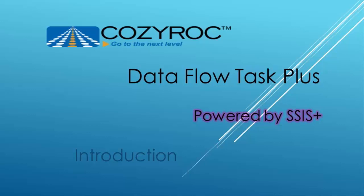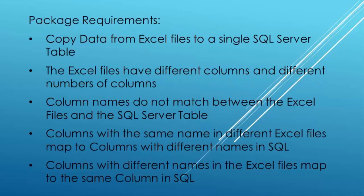In this video I'm going to show you how to handle a more complex situation. This scenario required me to set up a table that shows Data Flow Task Plus how to map the columns from the source to the destination. I'm going to go quickly through the configuration without much explanation since I have shown how to set most of this configuration up before. I will slow down my explanation when I'm showing anything related to the mapping of columns.